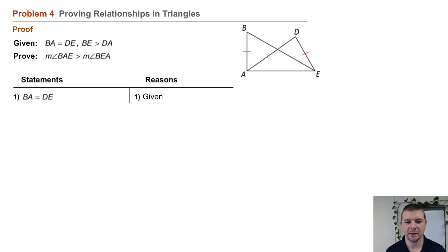Prove the measure of angle BAE is greater than the measure of angle BEA. In this example, we see a two-column proof. On the left are statements, on the right are reasons or justification.